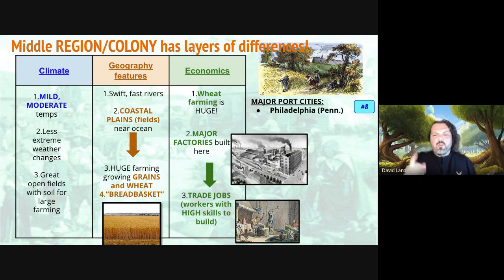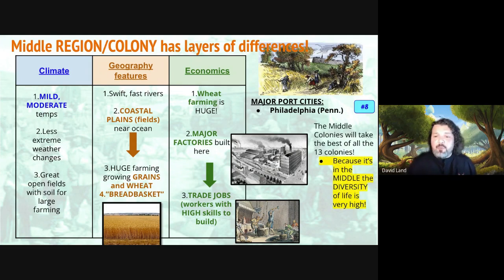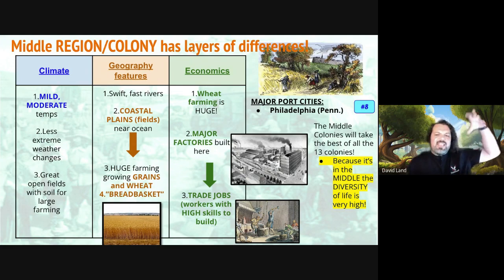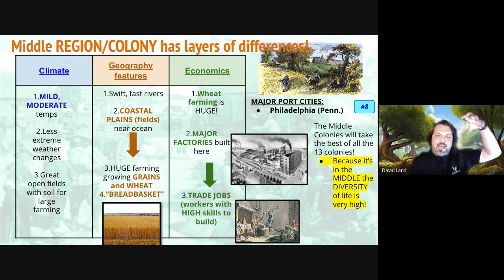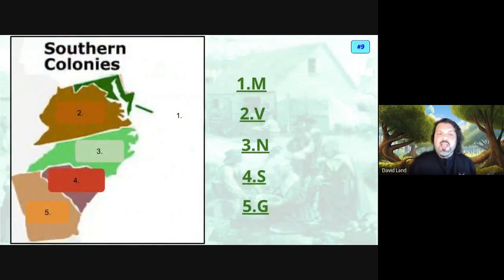A major port city is Philadelphia in Pennsylvania. The middle colonies are basically going to be very diverse — taking all of the north and all of the south, mixing it together into a beautiful place to live.